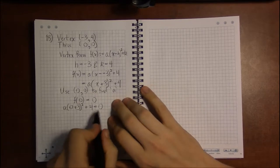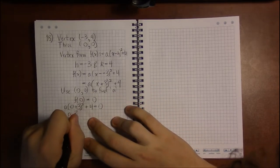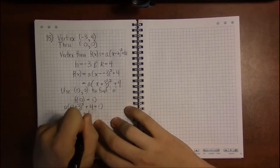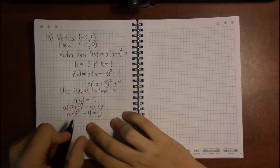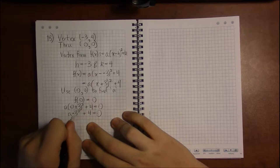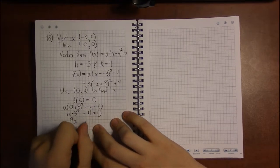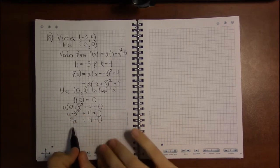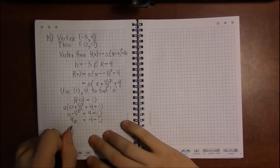So plug 0 in for x: a times (0 + 3) squared, then add 4. This should all equal 0. 0 plus 3 is 3, so we have 3 squared, a times 3 squared plus 4 equals 0. Well, 3 squared is 9, and instead of saying a times 9, we'll just say the more traditional 9a.